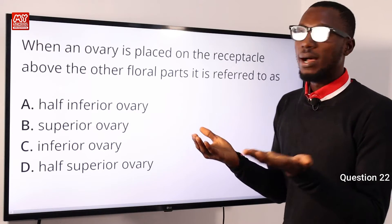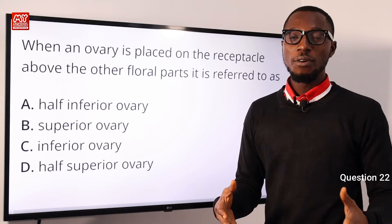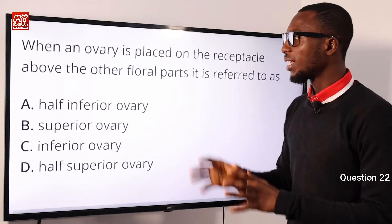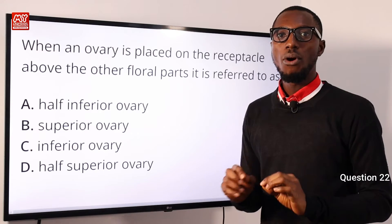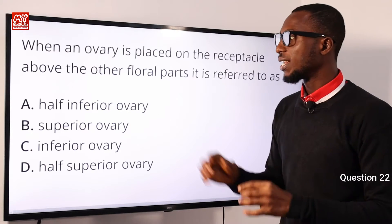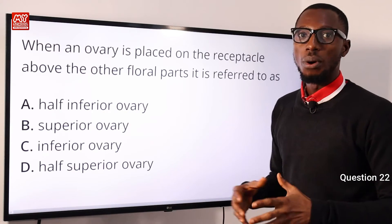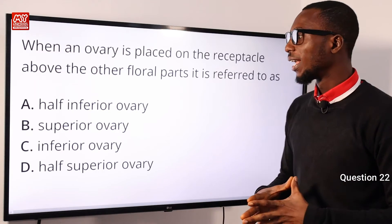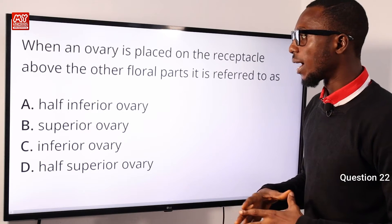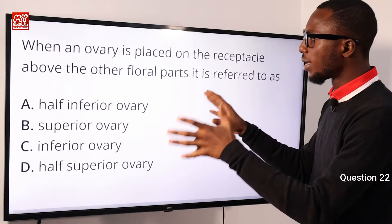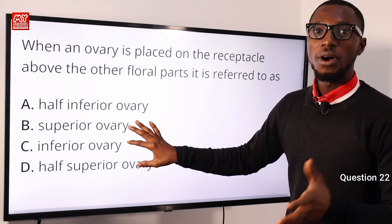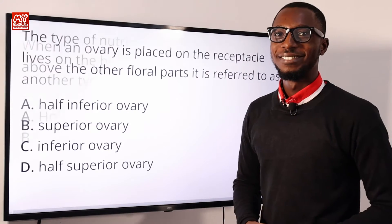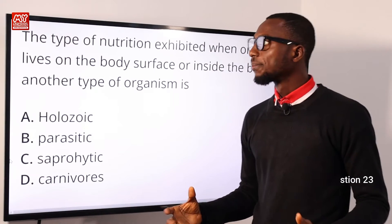When the ovary is found below the floral parts, that is an inferior ovary — referred to as an epigynous ovary. In cases where the floral parts are attached to the rim of the floral tube and the tube is not fused with the ovary walls, that is a perigynous flower — a half-inferior ovary. The correct option here is superior ovary or hypogynous ovary — option B.